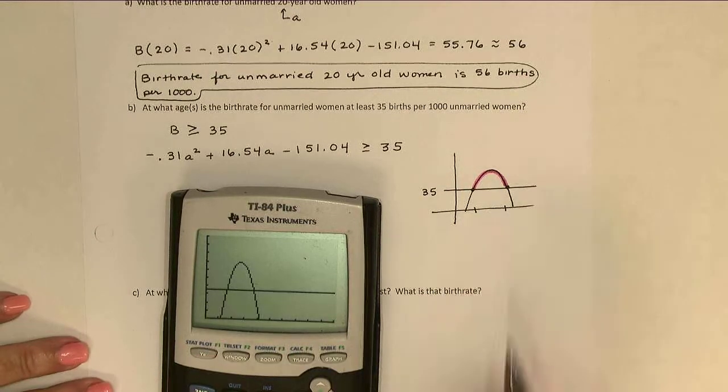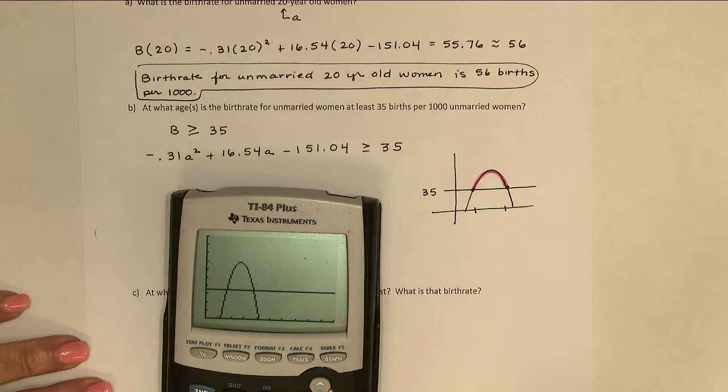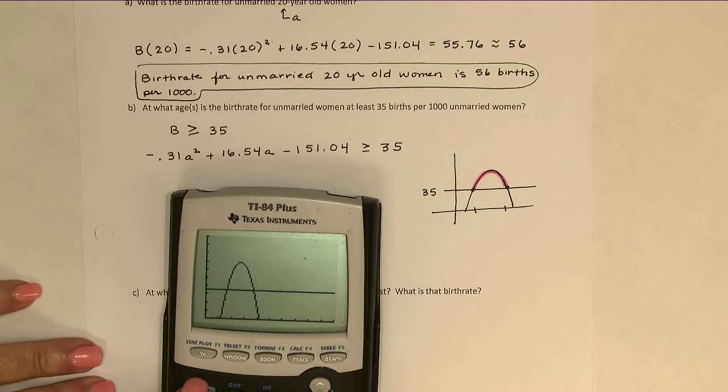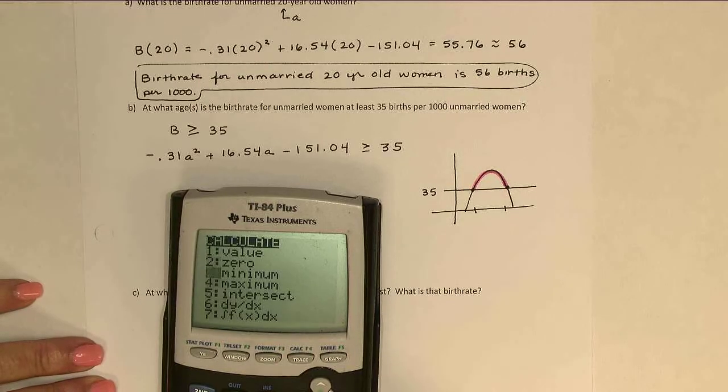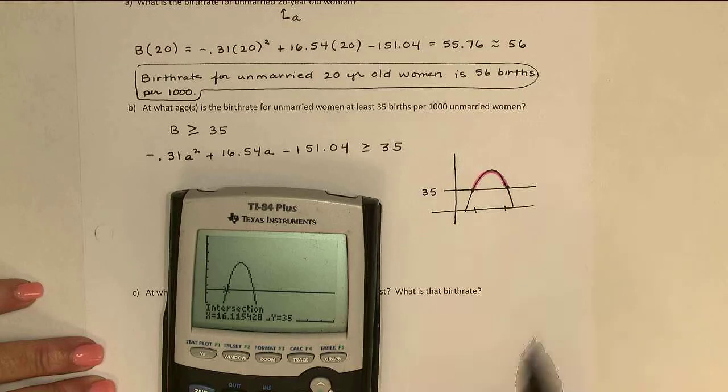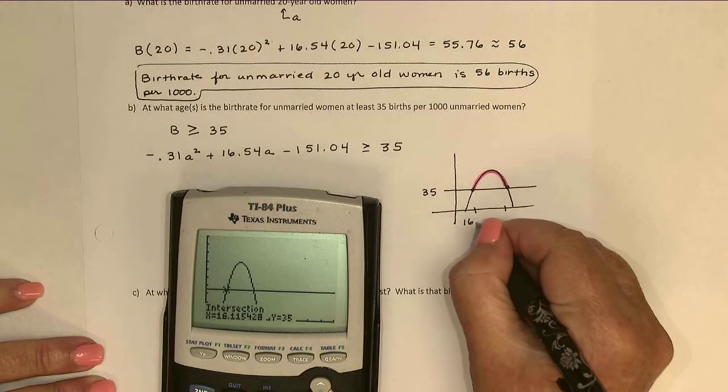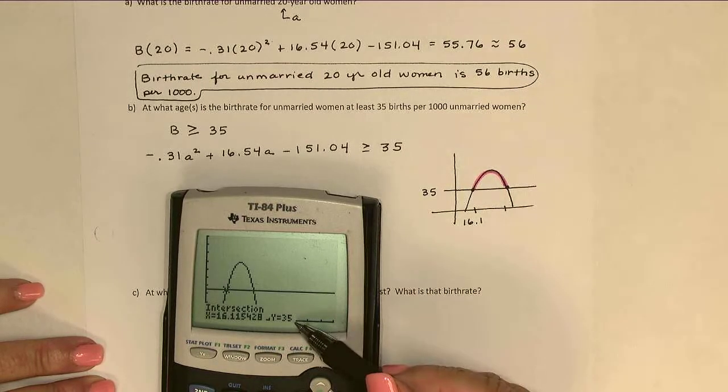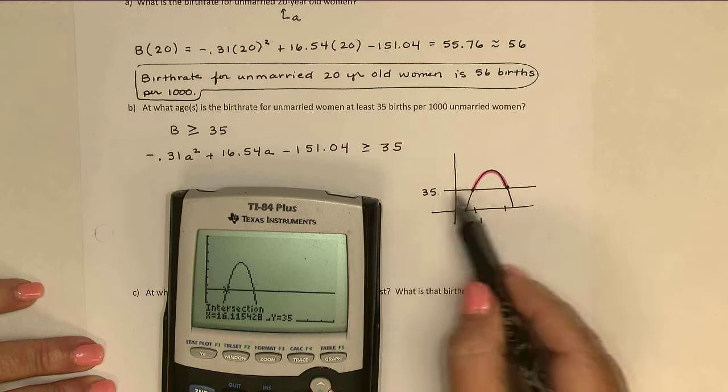In order to get those x values, I'll use the intersect feature of my calculator. So second calc, and then option five is intersect. And let's see, let me go over to the smaller intersection point first. And then just enter, enter, enter. The x value there is about 16.1. Notice the y value 35, exactly what it should be on that line.